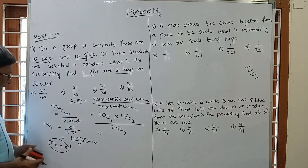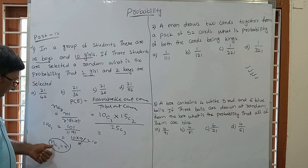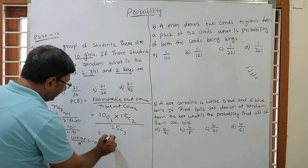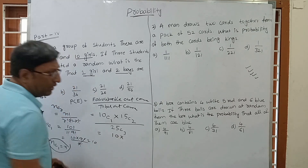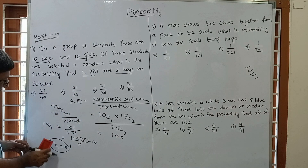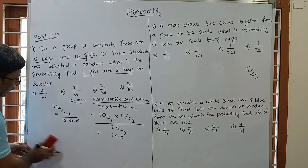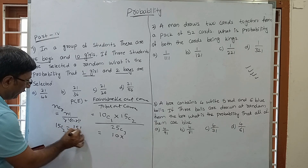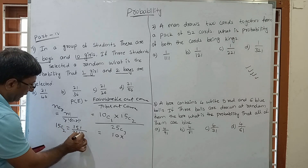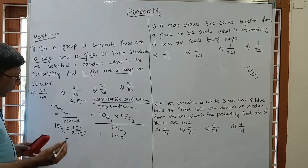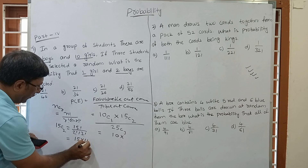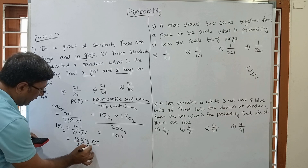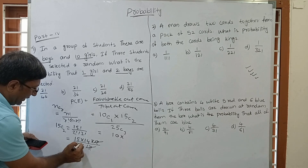If you select 1 from N, NC1 = N. So 10C1 = 10. Now for 15C2: using the formula, 15C2 = 15! / (2! × 13!) = (15 × 14 × 13!) / (2 × 13!) = (15 × 14) / 2. So the trick is: NC2 = N(N−1)/2. So 15C2 = (15 × 14) / 2 = 105.